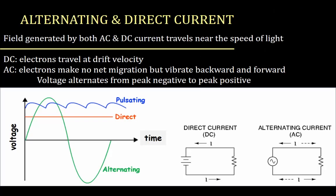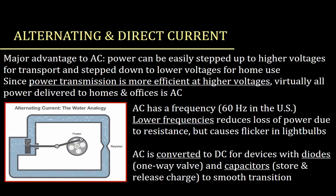There's a field generated by both AC and DC current that travels at almost the speed of light. In DC, electrons travel at a drift velocity, so it's pretty slow. In AC, electrons make no net migration — they go forward and backward continuously. Because of that vibration, voltage alternates from peak negative to peak positive. Direct current goes in one direction; alternating current goes back and forth in two different directions.